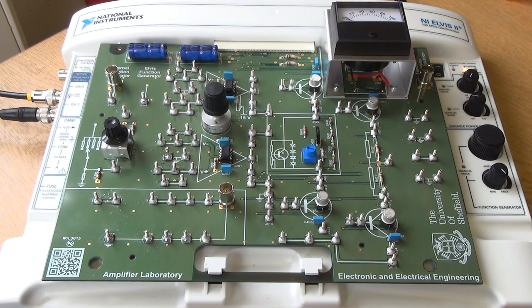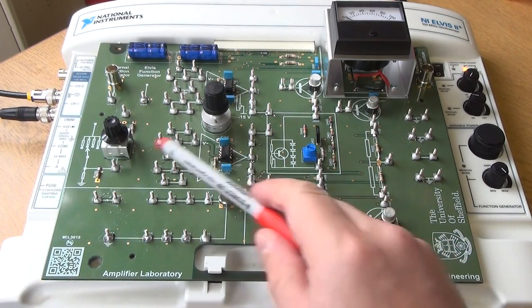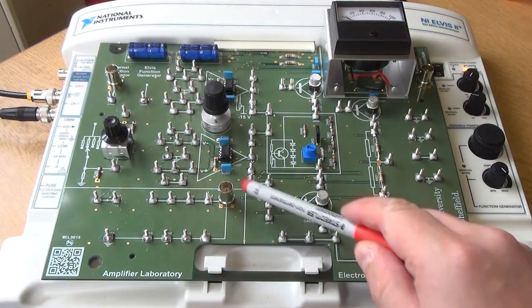You could use the ELVIS's function generator and oscilloscope to look at various points on the board, and some have been connected up underneath. If you're very swift, especially in day three, you can have some interesting experiments of your own having finished what's on the lab sheet, looking at various things like power dissipation in certain transistors and that sort of thing.